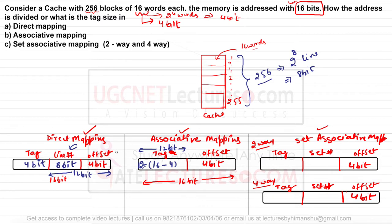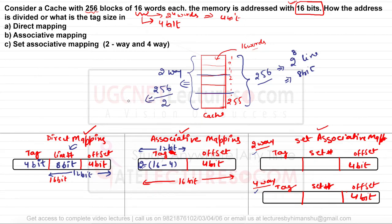In set associative mapping, first consider two-way set associative, where every set contains two blocks. Dividing 256 lines into groups of 2 gives 128 sets. To represent 128 sets we need 7 bits. So the set number field is 7 bits. With 4 bits for offset and 7 bits for set number, that is 11 bits total, leaving 5 bits for the tag.